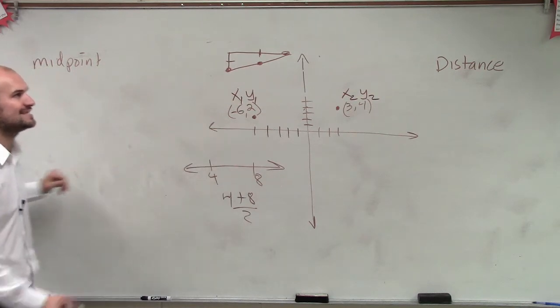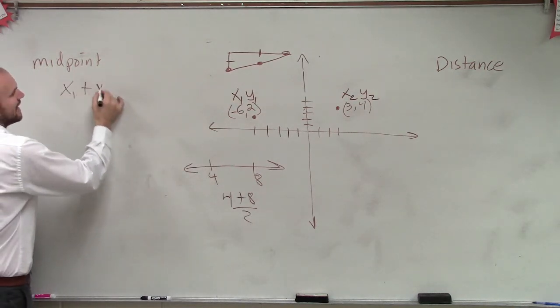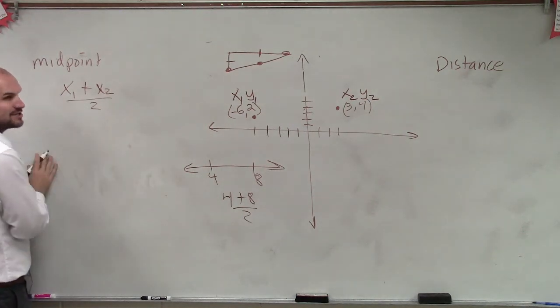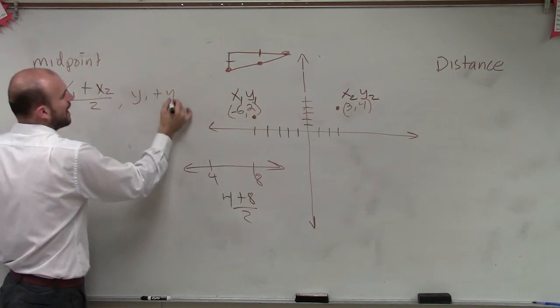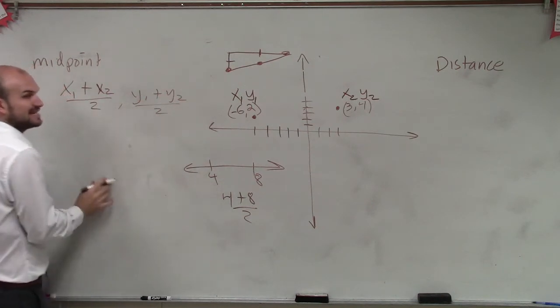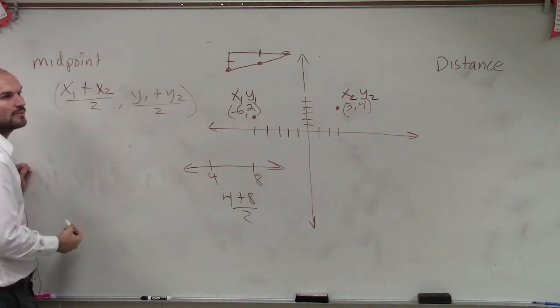So for the midpoint formula, that's exactly what I'm going to want to do. I'm going to say x₁ plus x₂ divided by 2, that's going to tell me the middle of the x values. And if I do y₁ plus y₂ divided by 2, that's going to tell me the middle of the y values. So that is your midpoint formula.